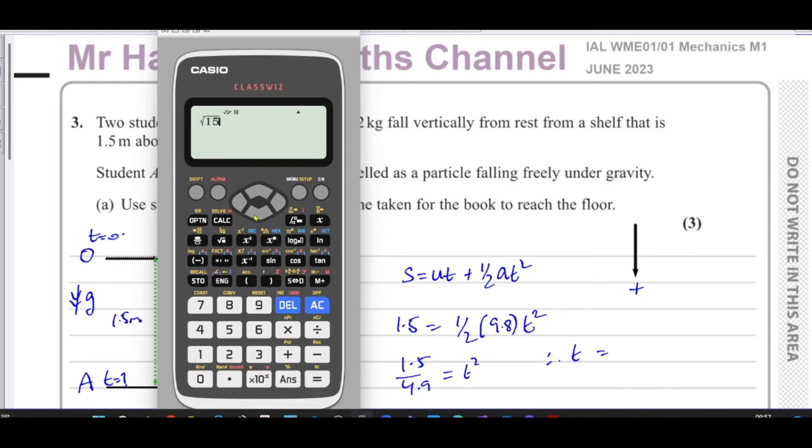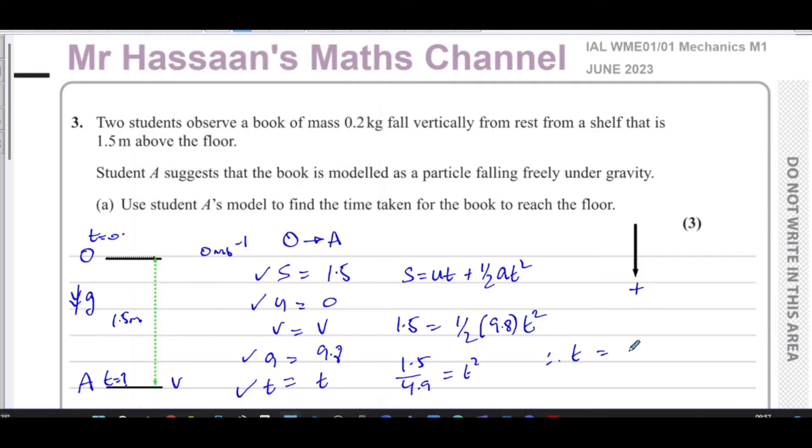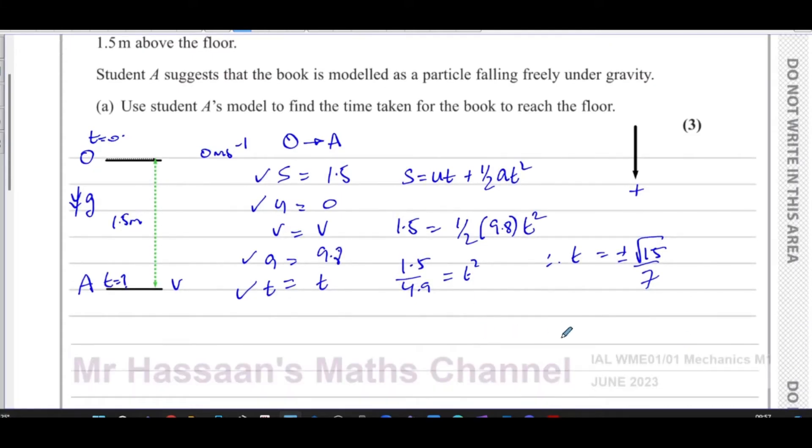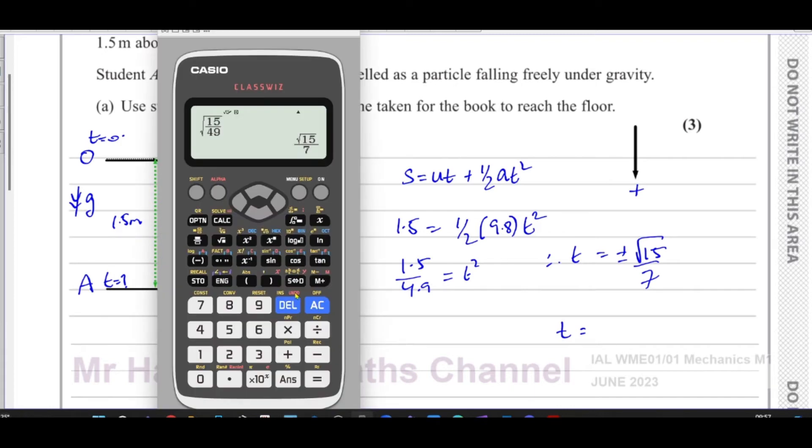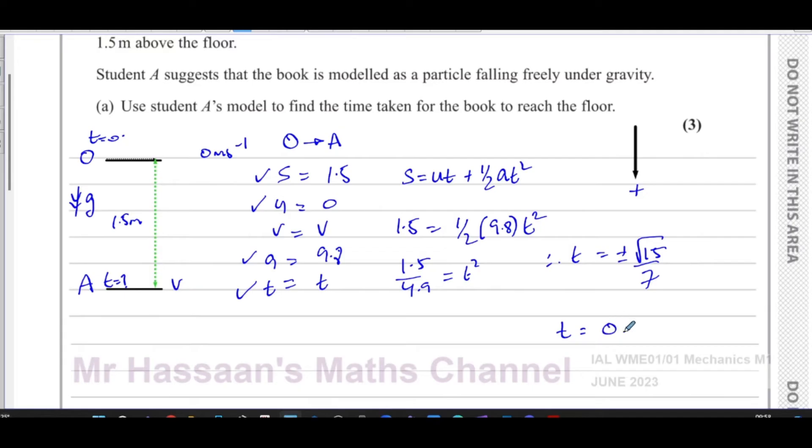So the square root of, it's like 15 over 49. So that's going to give us root 15 over 7. So initially it will give us plus or minus root 15 over 7. Of course the minus doesn't make sense for time, so it's going to be root 15 over 7, which is, as a decimal, 0.5532 seconds. So you're going to have time equals 0.5533 seconds.